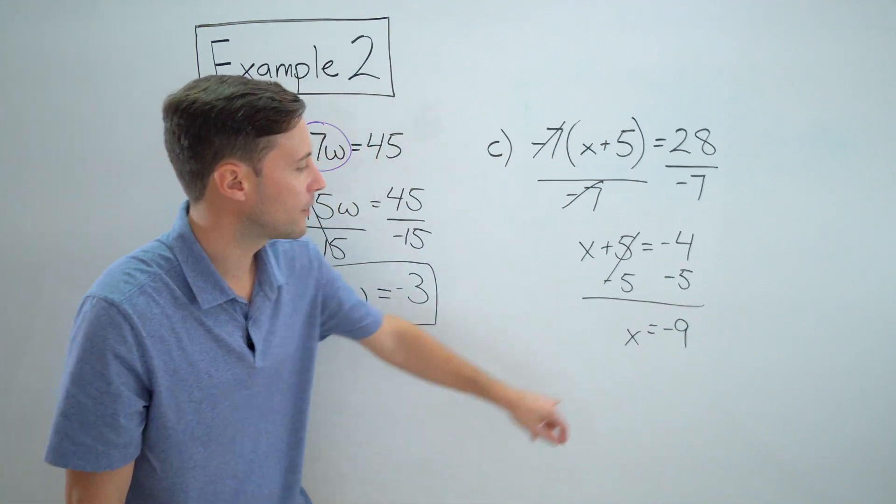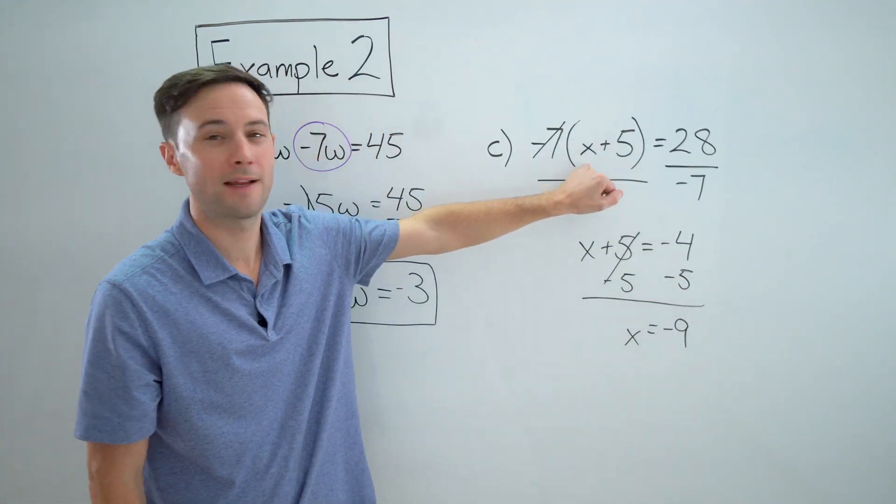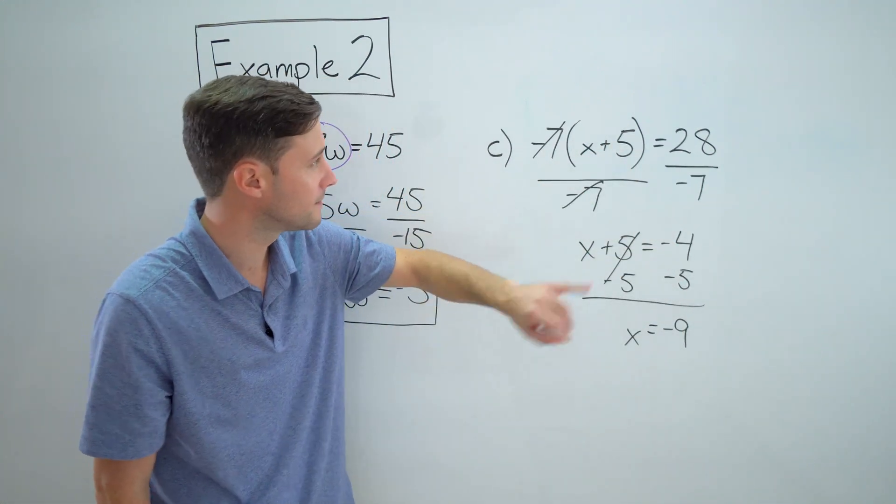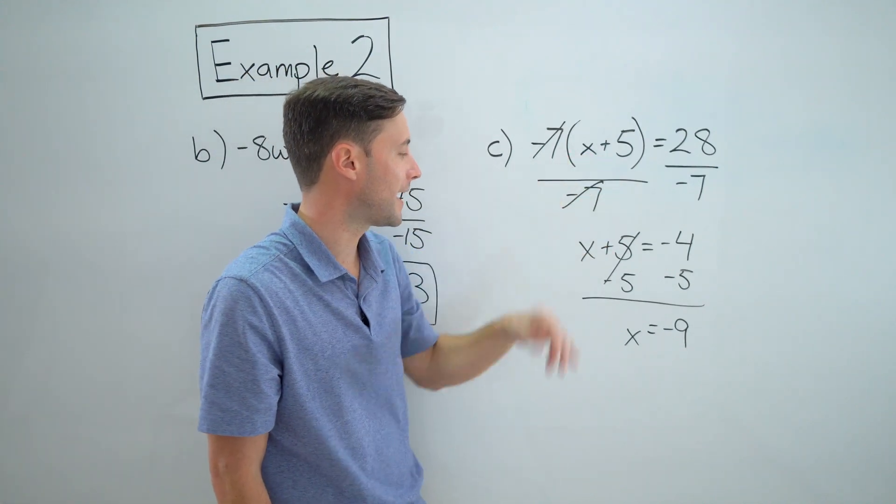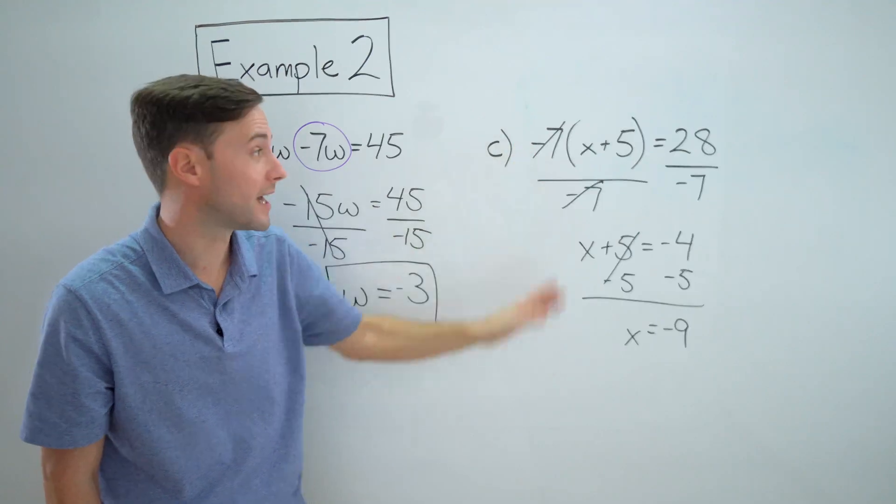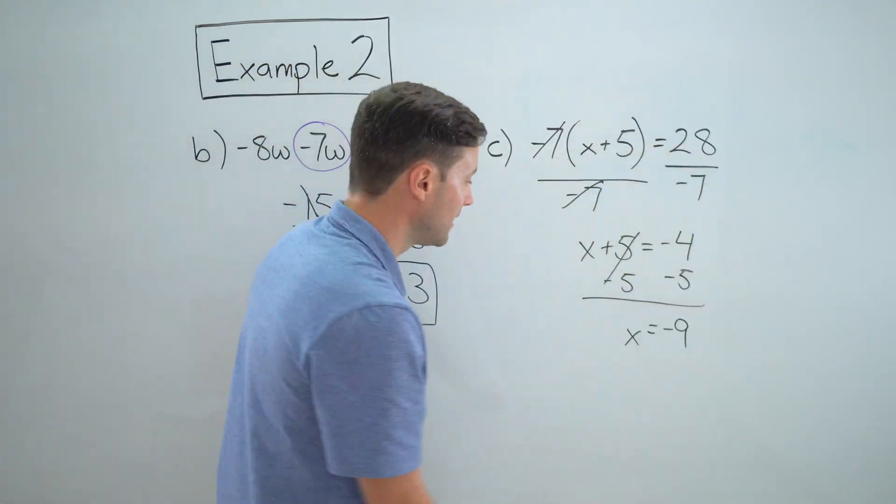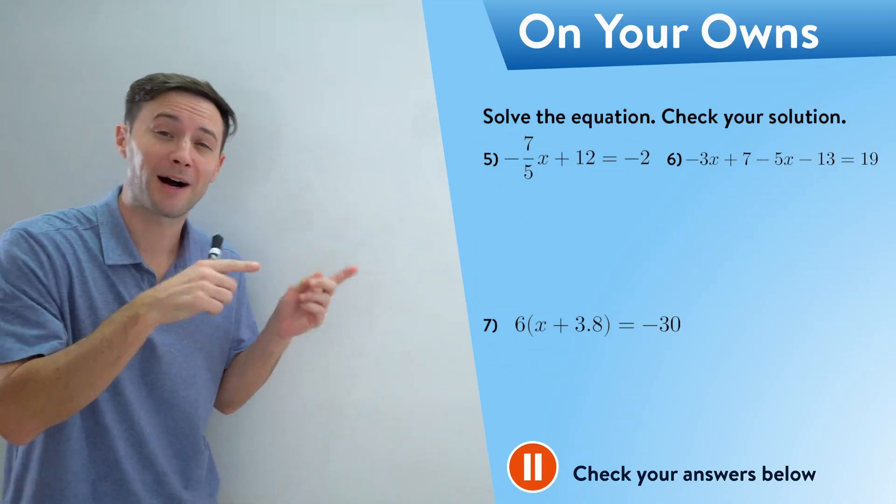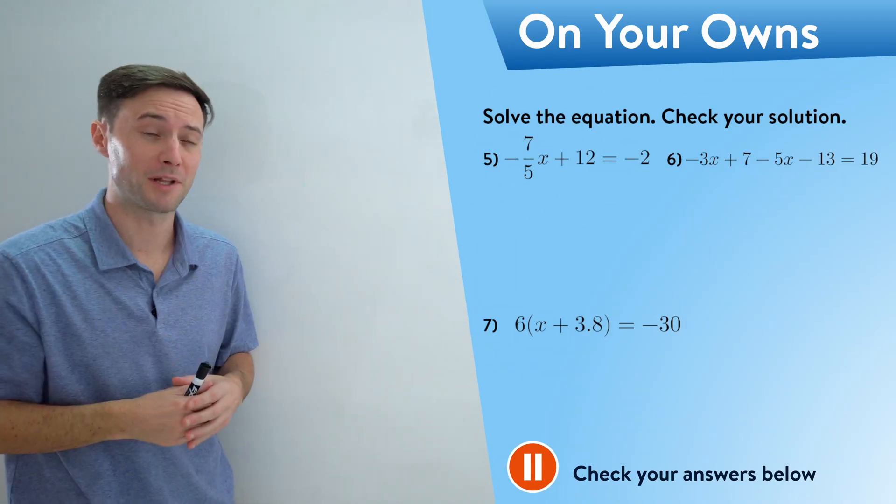And if I want to check that real quick, substitute negative nine in for x in my original equation, negative nine plus five is negative four, negative four times negative seven is 28. So I am happy with that. And here's some more to try on your own. Make sure you pause it and check your answers in the description below.